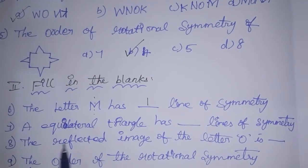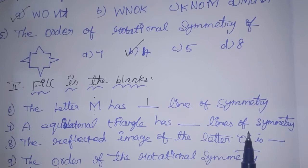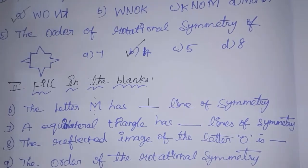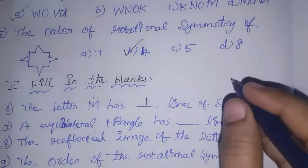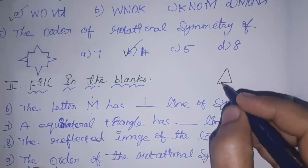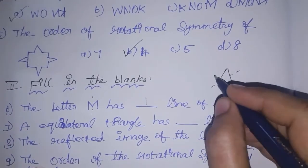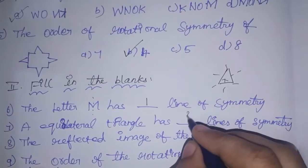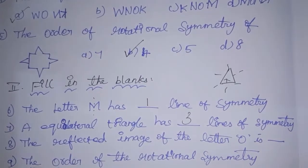An equilateral triangle has lines of symmetry. How many lines of symmetry does an equilateral triangle have? An equilateral triangle has three equal sides, so it has three lines of symmetry.